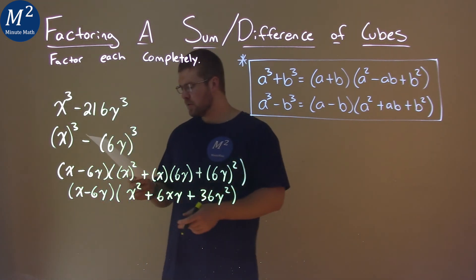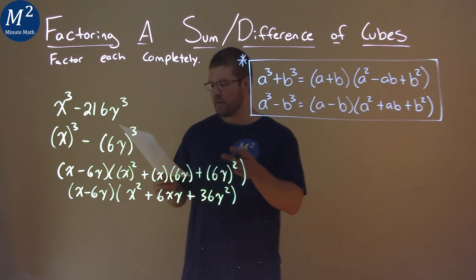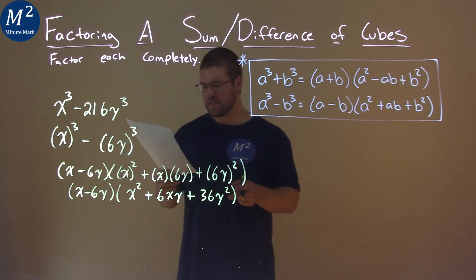And so our final answer here is x minus 6y times x squared plus 6xy plus 36y squared.